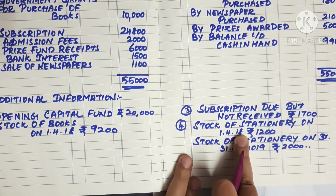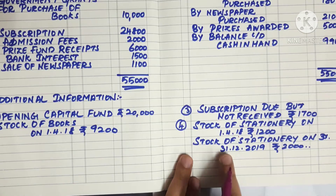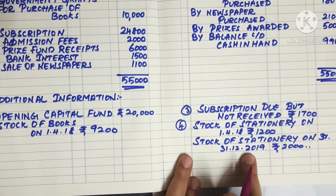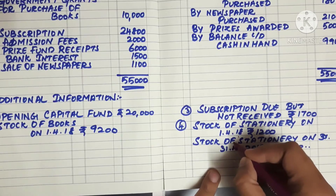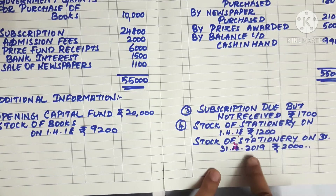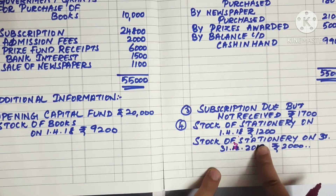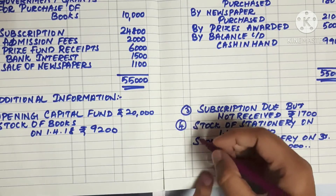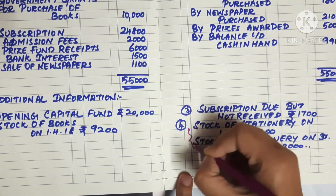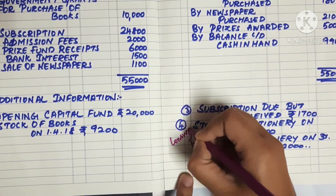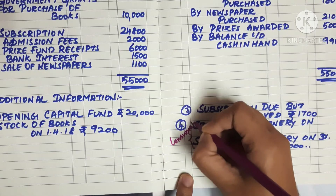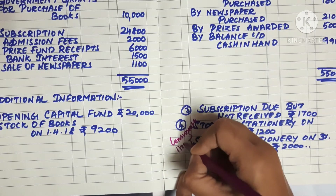The opening stock is for 1-4-2018 and the closing stock is for 31-3-2019. So we have two stock figures. Here is one of the consumable items. If you look at the consumable items, you can check the video description box for more reference.